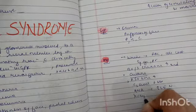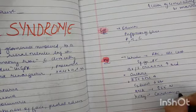X-ray chest will show cardiomegaly and renal imaging will be normal.